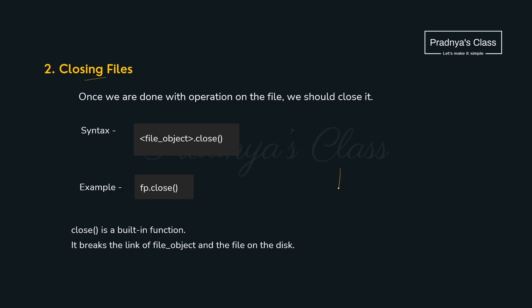Now here is the operation of closing the file. Why do we close the file? Because there will be a connection established between the disk on your computer and the program, and we need to break it to keep your data secure. For that we will be using the close() function. It doesn't take any parameter and works with the file object created by the open() function.